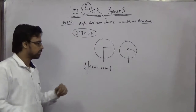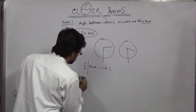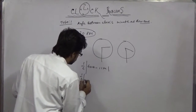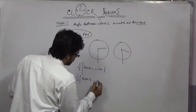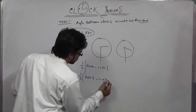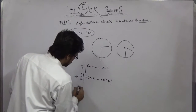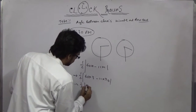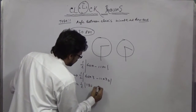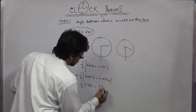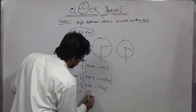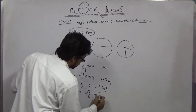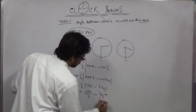The formula is: half into (60h minus 11m), where h means hour and m means minute. So for 3:30, it is half into (60 × 3 minus 11 × 30), which gives half into (180 minus 330).